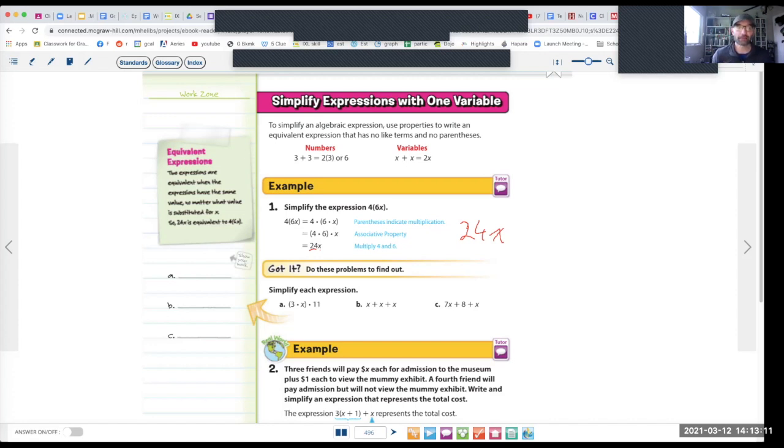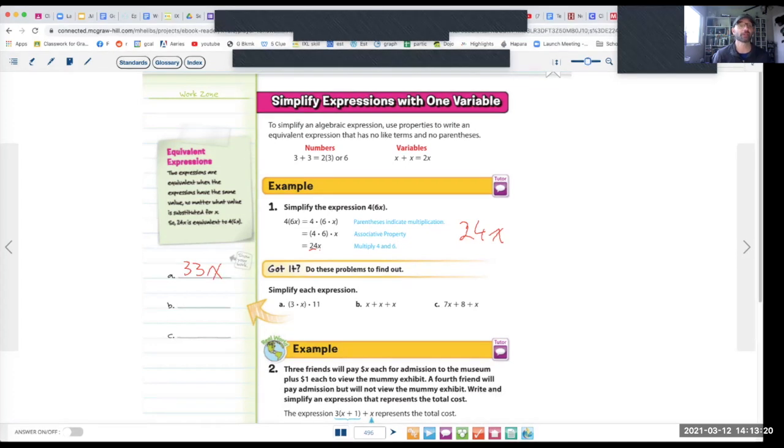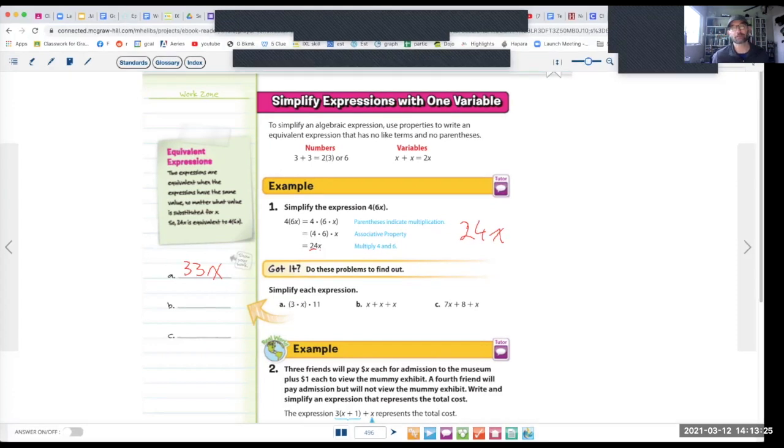All right, so for this 3 times x times 11 or 3x times 11, you just multiply the numbers. So this should be 33x because 3 times 11 is 33 times x is 33x. Now you try letter B. This should be pretty easy. Ready? Go. Well, x times x times x, that's the same as 3 times x, so it's just 3x. Wow, this is great. All right, and now let's try letter C. Ready? Go.